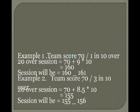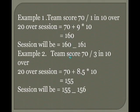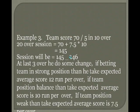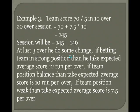Example 1: team scores 70 with 1 wicket down in 10 overs — session 70 plus 9 multiplied by 10 equals 160, offered at 160-161. Example 2: team scores 70 with 3 wickets down — 20-over session will be 70 plus 8.5 multiplied by 10 equals 155, offered at 155-156. Example 3: team scores 75 with wickets down — 20-over session 70 plus 7.5 multiplied by 10 equals 145, offered at 145-146.